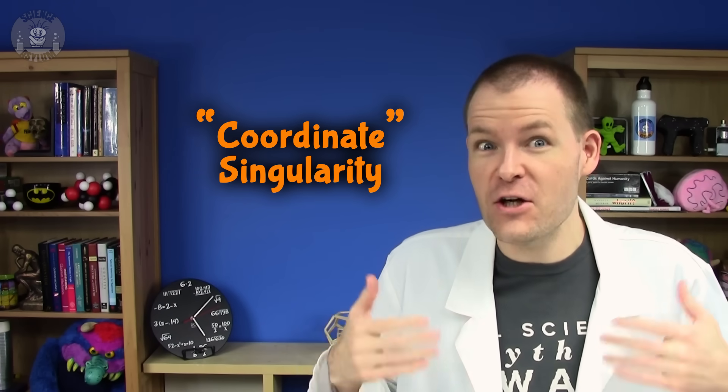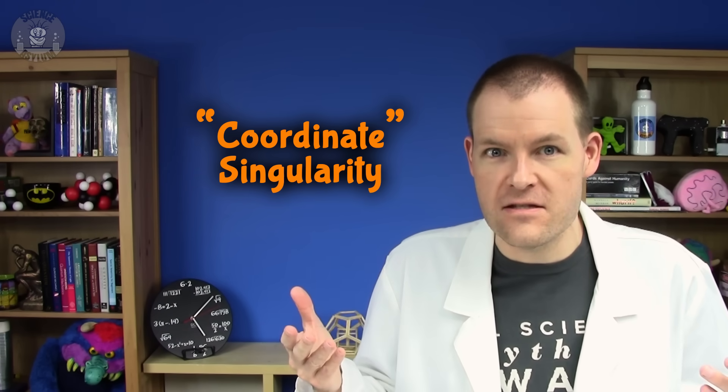Yes, the event horizon is a second singularity for the black hole. We call it a coordinate singularity because you can remove it with a change in coordinates. Bottom line though, a distant observer sees a problem at the event horizon, but someone falling into the black hole does not. I did a whole video about this a while back.